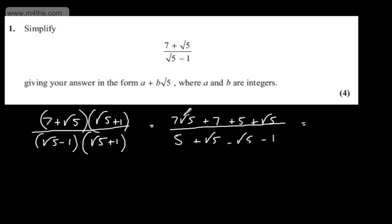So if we just tidy this up, in the numerator we have 7 root 5 plus root 5, which is 8 root 5, and 7 plus 5. So we're going to have 12 plus 8 root 5.